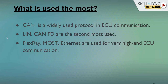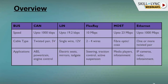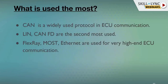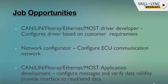Next, LIN and CAN FD are chosen depending on whether you need lower or higher speed. For very specific high-end applications — steering, traction, media players, IP cameras, radar — FlexRay, MOST, and Ethernet are used because data must be processed at very high speed.